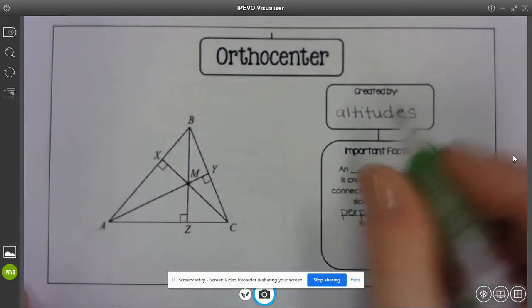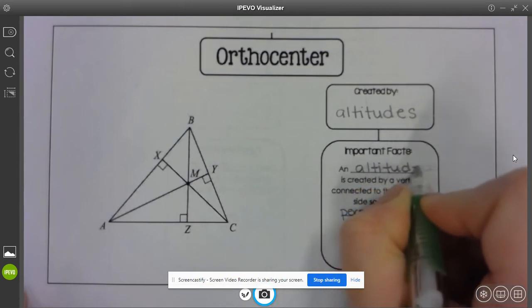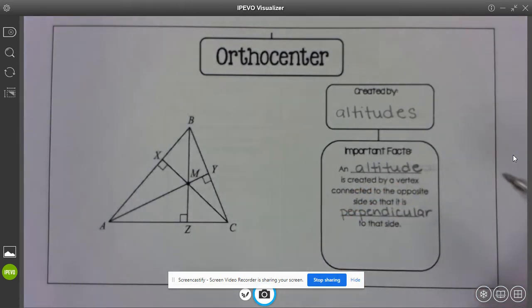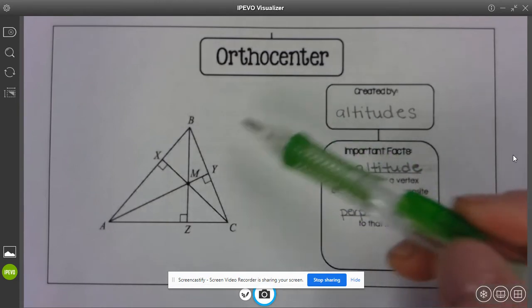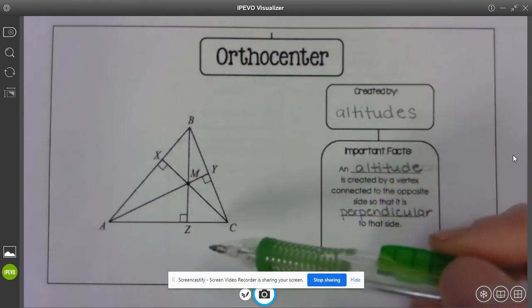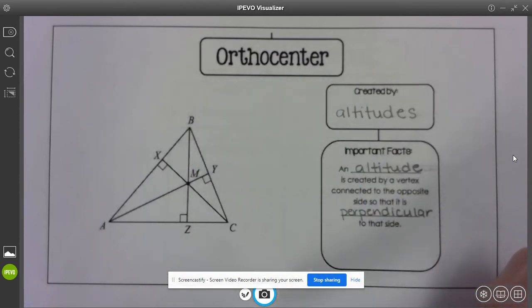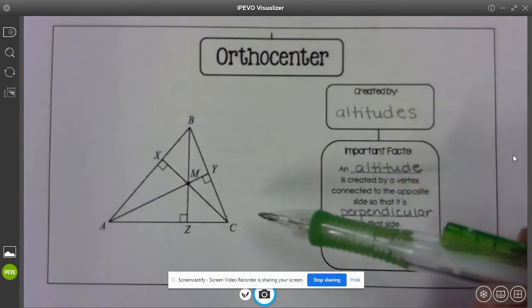Excuse me, this is supposed to say altitude, not orthocenter. So my altitude is the vertex dropping down to the opposite side so that it's perpendicular. And then those three altitudes inside of my triangle is what creates my orthocenter.